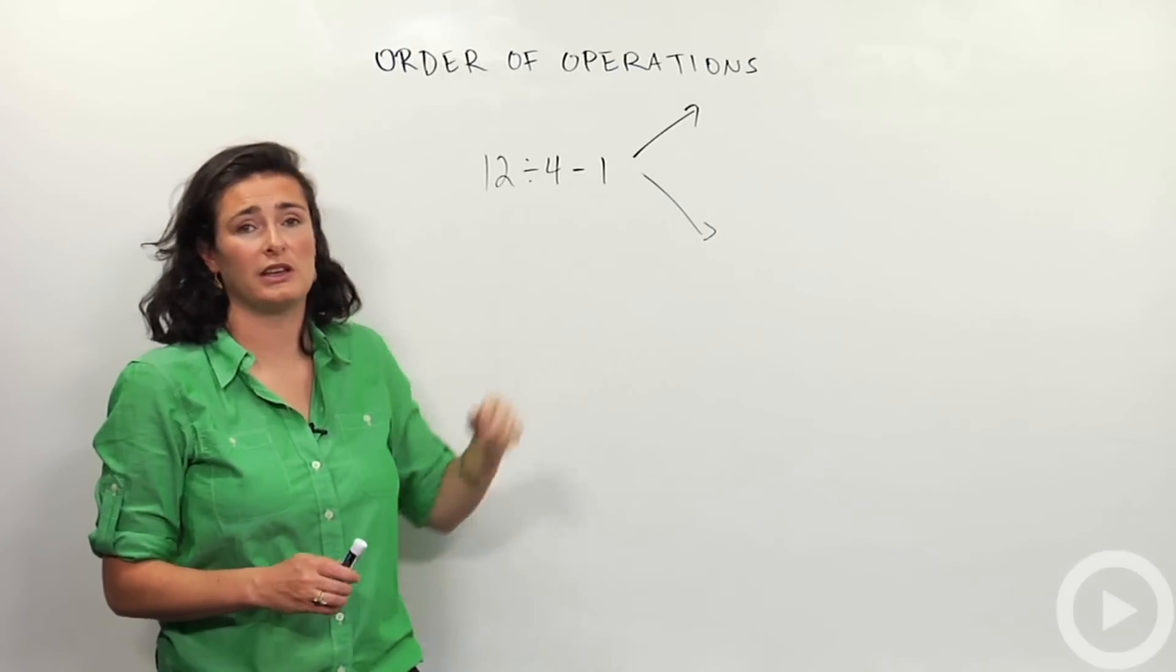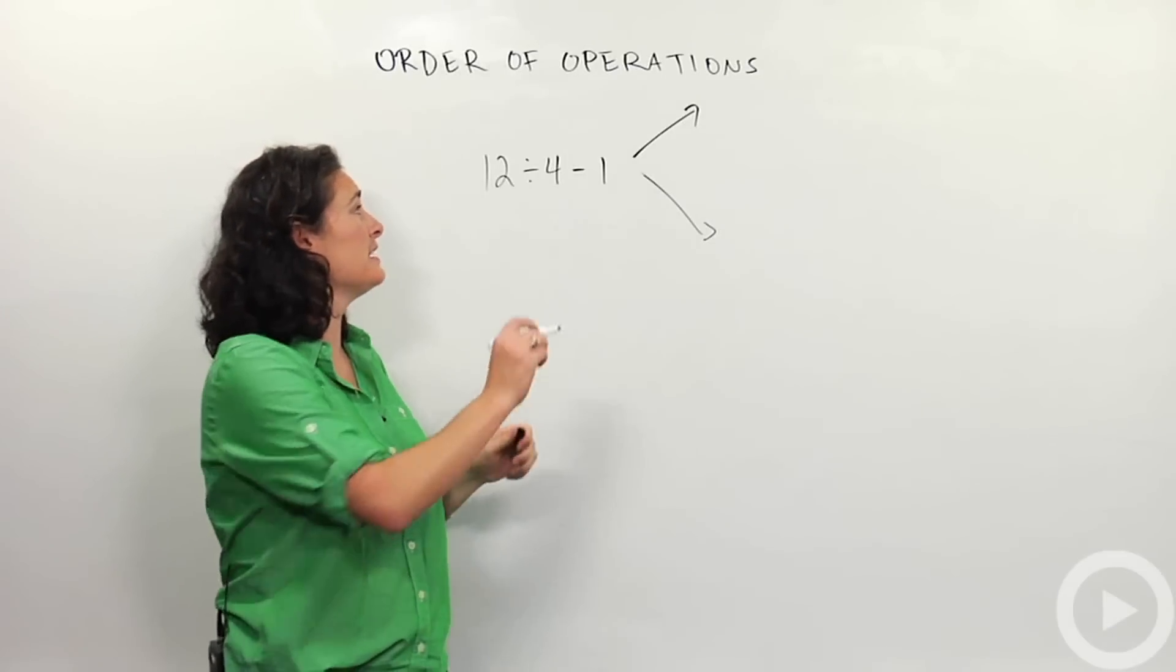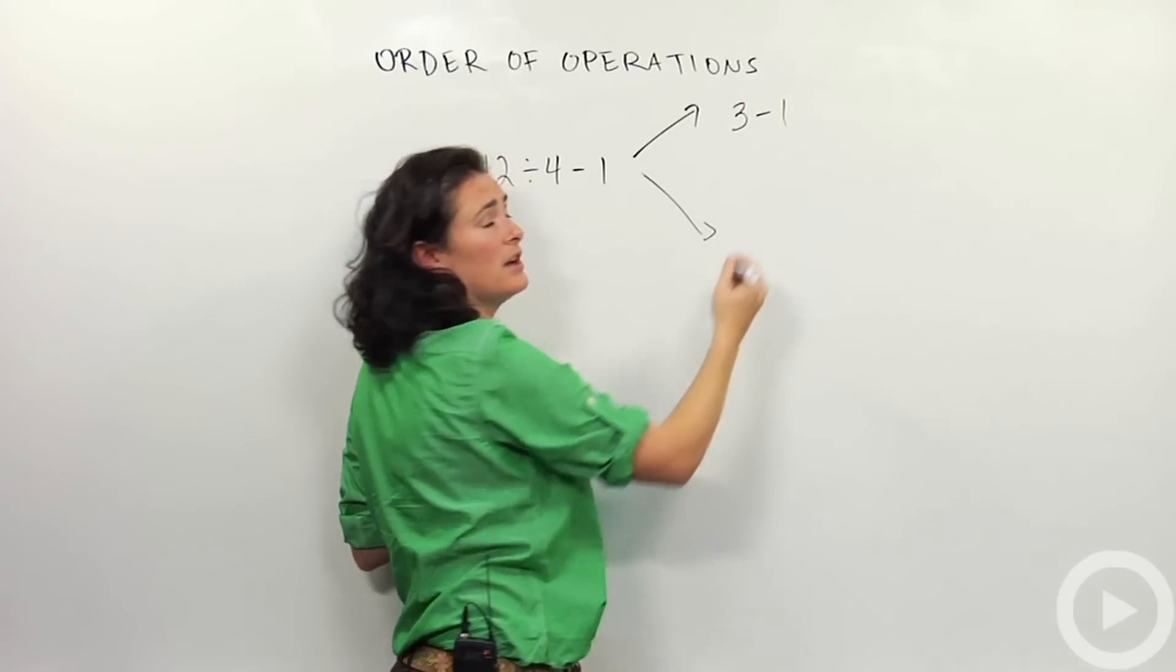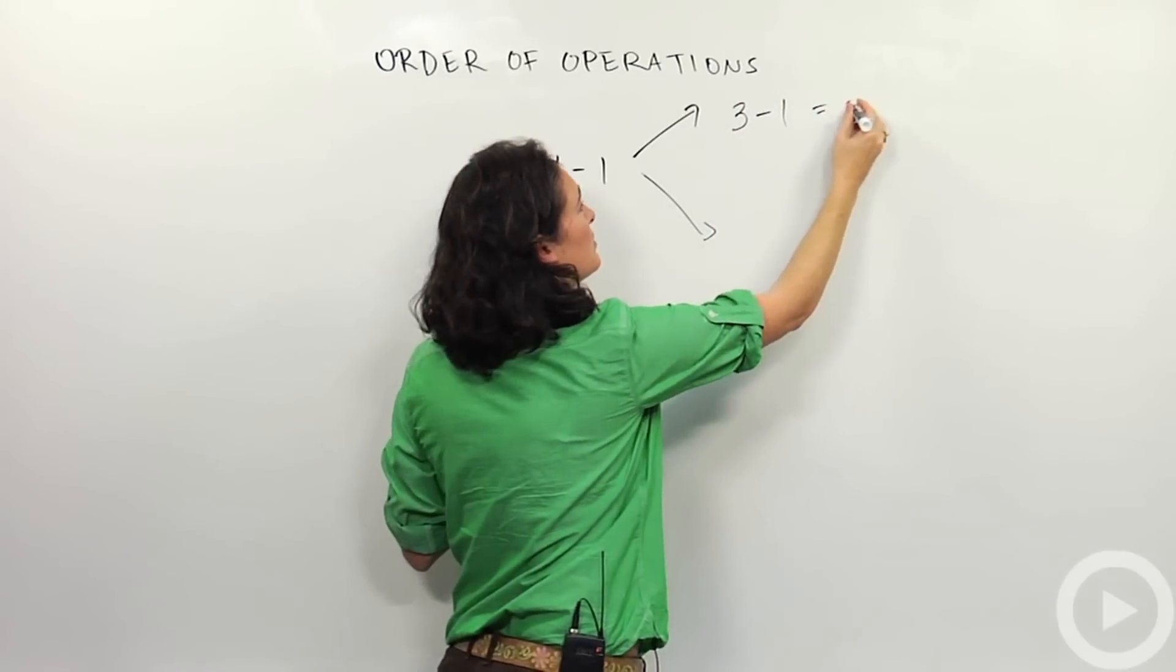12 divided by 4 subtract 1. One way you could do this problem is to do 12 divided by 4 is 3. So 3 subtract 1. So I think one possible answer would be 2.